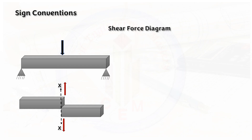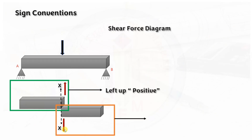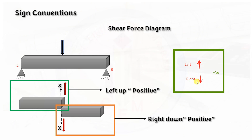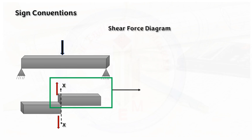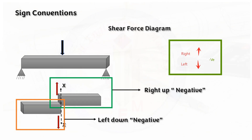Let us look into the sign conventions for the shear force diagram. Consider points A and B with section XX cut at the middle. At section XX, left upward force is positive and right downward force is positive. Conversely, right upward is negative and left downward is negative. So in summary: left upward and right downward is positive; right upward and left downward is negative.